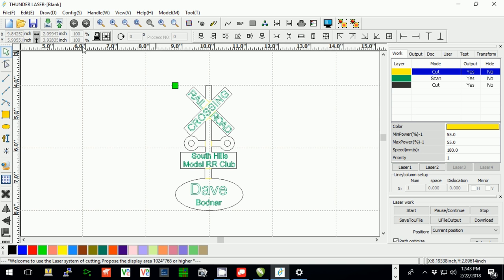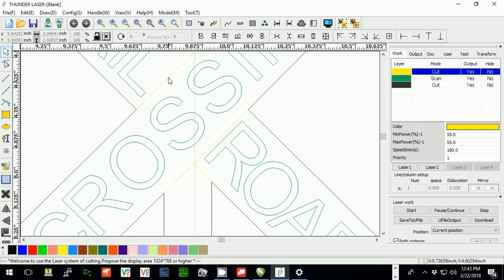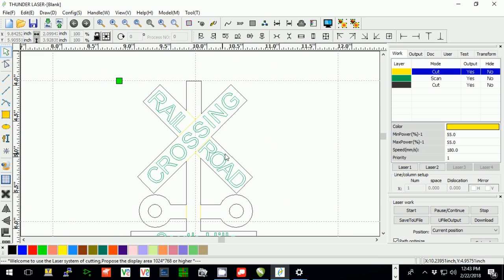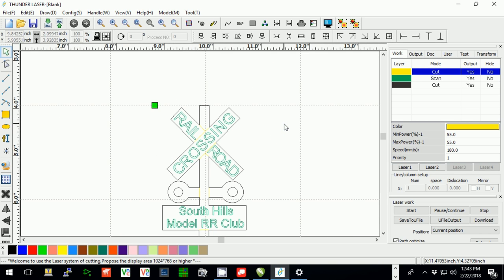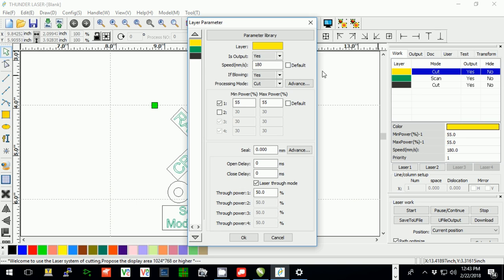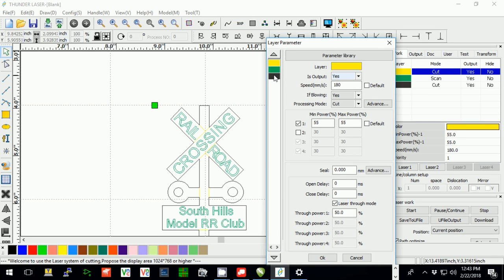This is the Thunder laser program that goes in between CorelDRAW and the laser cutter itself. We brought our graphic in, and you'll notice the colors are the same. There's the yellow, the black for the outline, and the green for the letters. What we're going to do is set different parameters for each one of those colors by coming over here, and you'll see the yellow, the green, and the black.